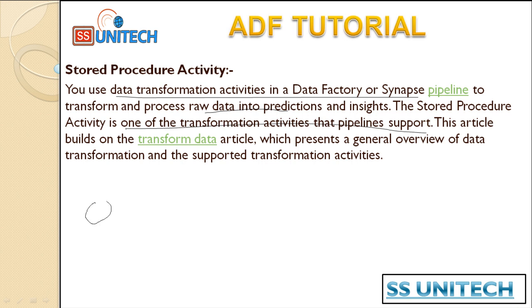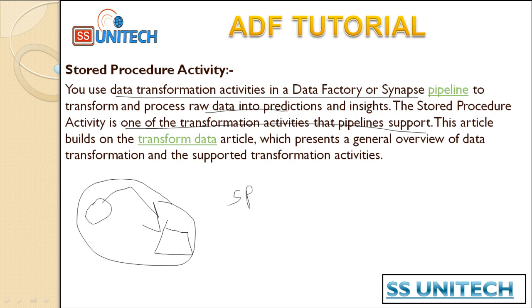For example, in the input we are getting the raw data and loading it inside the SQL Server Table. If we want to do some cleanup on that data, we have written a Stored Procedure. In the same pipeline, we can first load that raw data into the SQL Server Table and then execute the Stored Procedure written for the cleanup activity. That Stored Procedure will take the input from your SQL Server Table and load it into the final table. We can achieve this on the same pipeline using the Stored Procedure Activity.